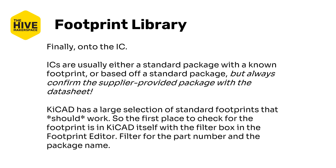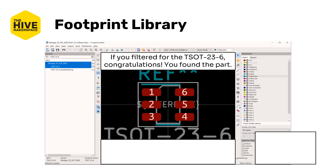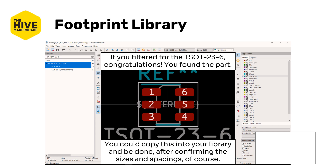KiCad has a large selection of standard footprints that should work, so the first place to check for a footprint is actually in KiCad itself — use the filter box in the footprint editor to filter for the part number and package name. If you filtered for TSOT-23-6, congratulations — you found the part. You could copy it into the library and be done after confirming the sizing and spacing, but that would sort of defeat the purpose of this video.